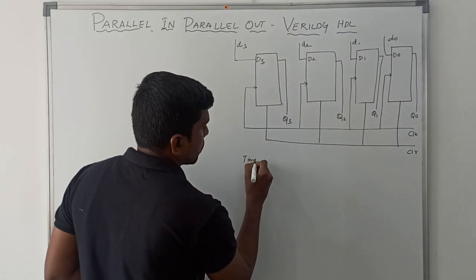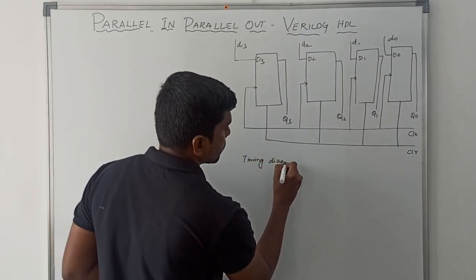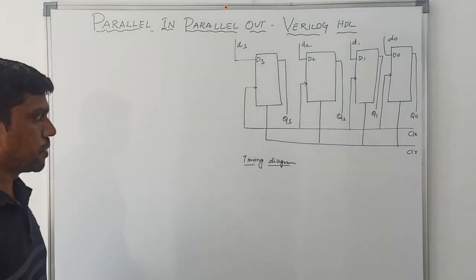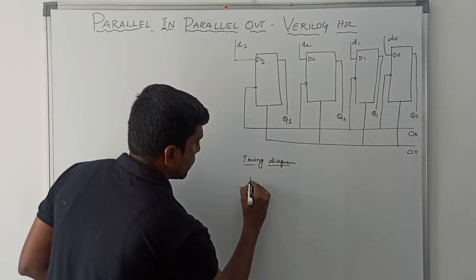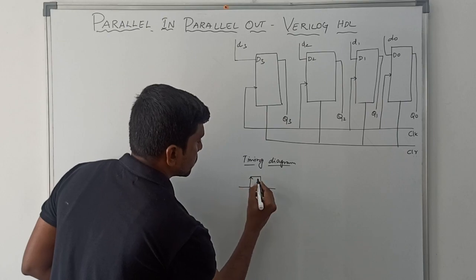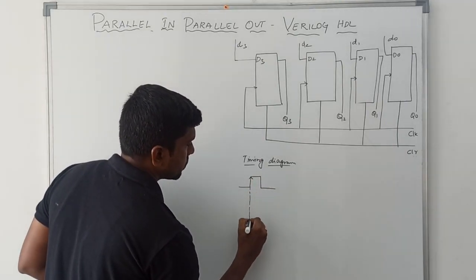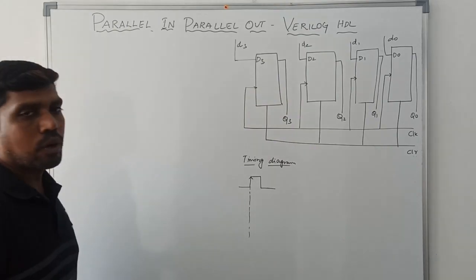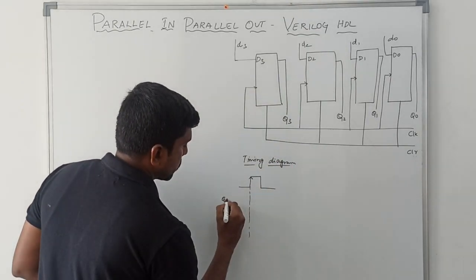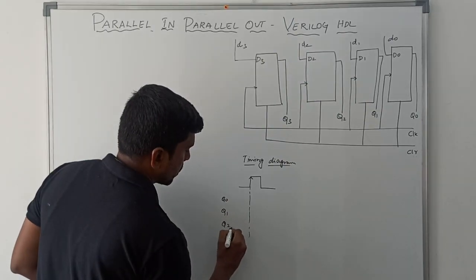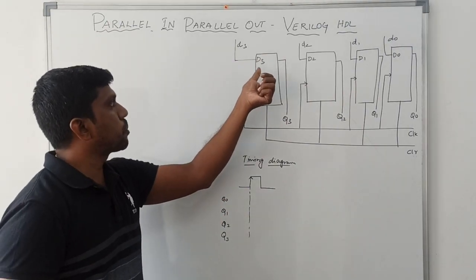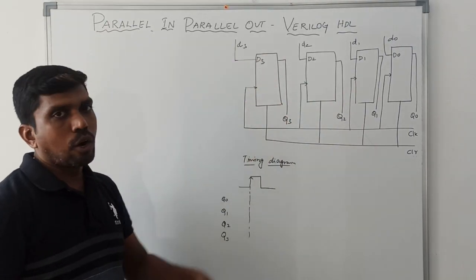Now I am going to draw the timing diagram for parallel-in-parallel-out shift register. Here is the clock signal. We have 4 outputs: Q0, Q1, Q2, Q3. Based on the clock signal, the data is processed and the output signals are released.